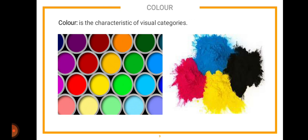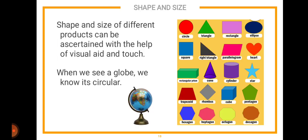Next is shape and size. The shape and size of different products can be determined with the help of visual aid and touch. You can see the shape of an object and also touch it to tell whether it is square or circular. For example, when you see a globe, you know it's circular — and even if you feel it with your hands, you know it is in a circular form.